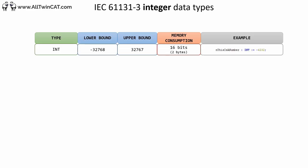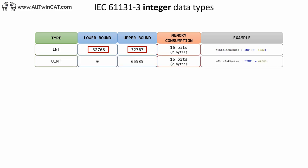In TwinCAT 3 we have a wide range of integral data types. The most basic one is INT, which is signed and thus capable of representing both positive and negative integers. It requires two bytes in the PLC. Next we have UINT, which occupies the same amount of memory as the signed INT, but because it is unsigned you can have twice as many positive integers.